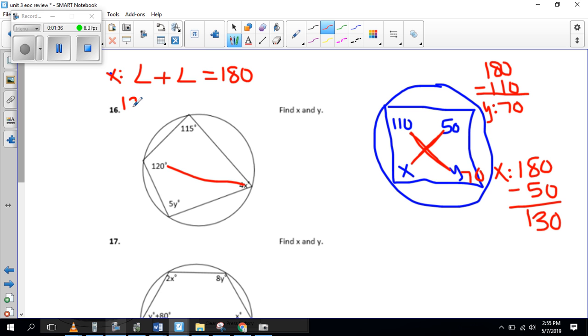We'll do 120 plus 4x equals 180. So we subtract 120. And then this becomes an equation where we just solve for x. So we subtract 120 from both sides.